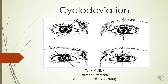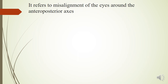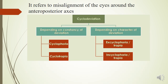Cyclo deviation refers to the misalignment of the visual axis or the eyes around the anterior-posterior axis. It is further classified depending on the constancy of the deviation or the direction of the deviation.